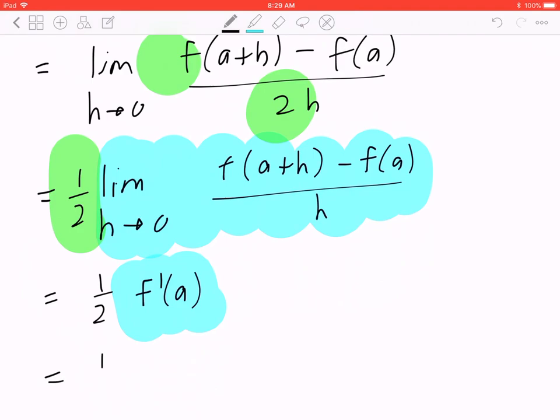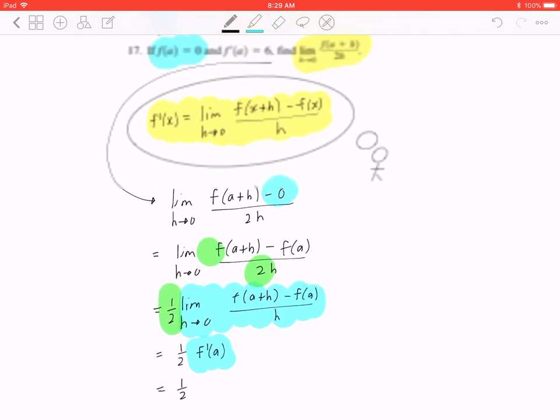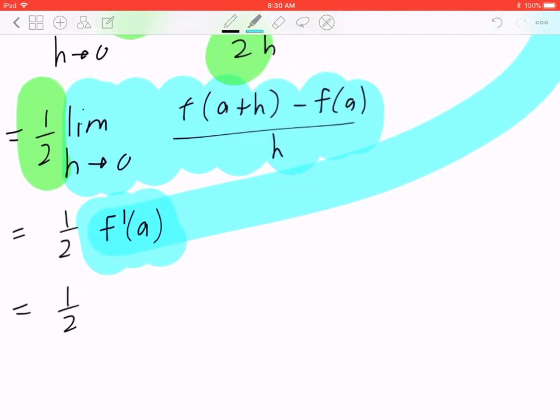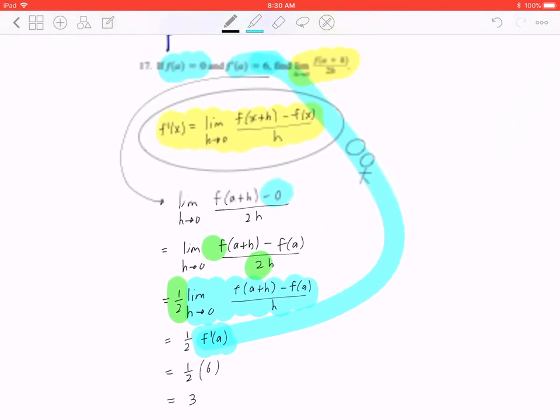So you go back, look at the given, f prime of a is going to be six. So that's half times six, which means the final answer is going to be three.